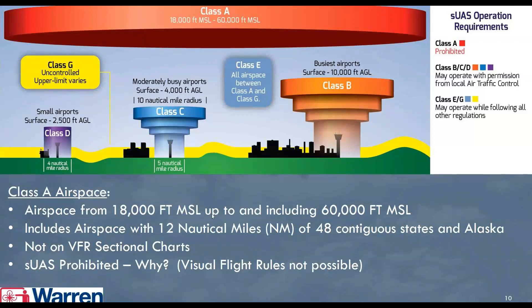Here's another representation of airspace. Class A runs from 18,000 feet MSL to 60,000 feet MSL. Class E is all airspace between A and G that isn't B, C, or D. Class G exists everywhere next to the ground where there are not cities, large buildings, or controlled airspace B, C, or D. Above where Class G ends is always Class E, until you get to Class A.